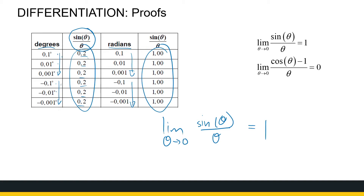We need this limit value in our derivative — you will see where we use it. If sine of theta over theta is not equal to one, then the derivative of sine of x is not cosine of x. The derivative of sine of x is only cosine of x because of that limit value. So if we're using degrees, we can't use these derivatives — that's why we need radian measure when doing calculus with trig functions. Similarly for cosine, we need the limit as theta approaches zero of cosine theta minus one over theta to equal zero.